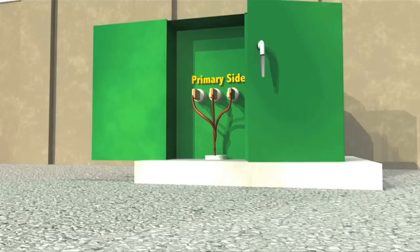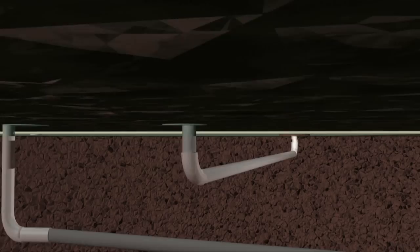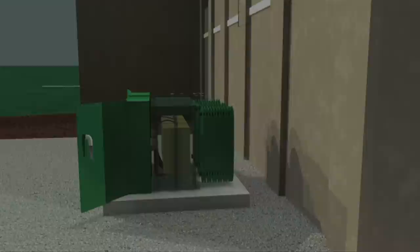Wires connecting to the bottom of each winding will then return to the low or secondary side of the junction box. From here, the wires will pass through conduit and travel underground to switchgear for further distribution.